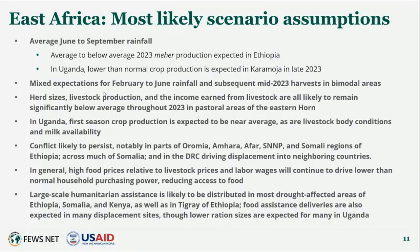In Uganda, first season crop production is expected to be near average in bimodal areas outside Karamoja broadly, with livestock body conditions and milk availability near average. We expect a continuation of conflict — notably in the areas mentioned in Ethiopia, across much of Somalia, and in DRC — but anticipating conflict levels in Tigray to remain minimal to low. We also expect large-scale assistance to continue, including to Tigray and displacement sites, though with some differences across countries in assistance expectations.